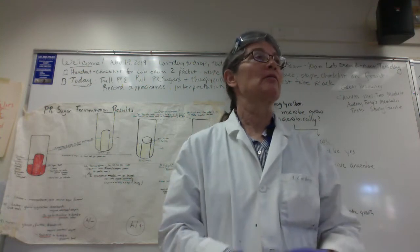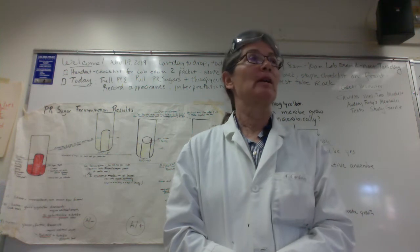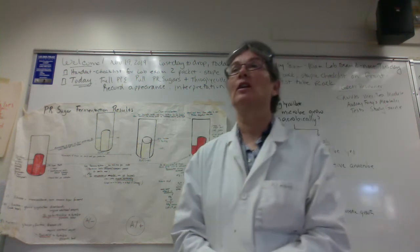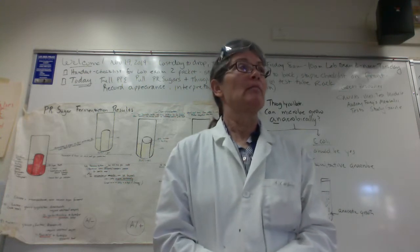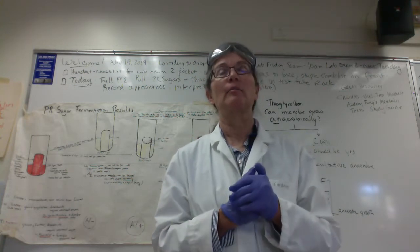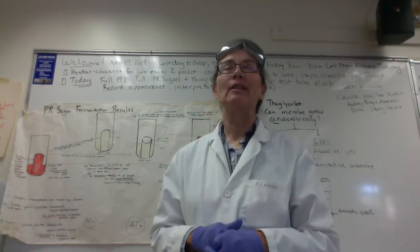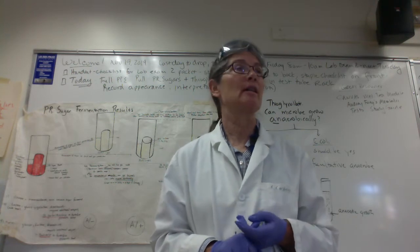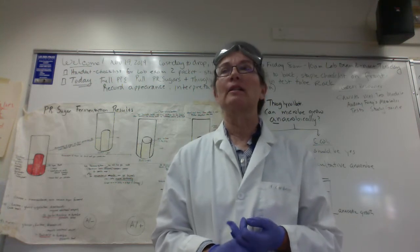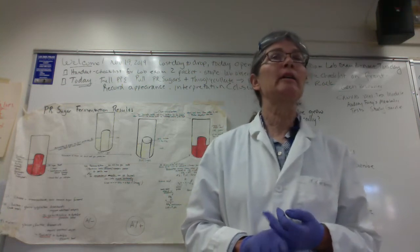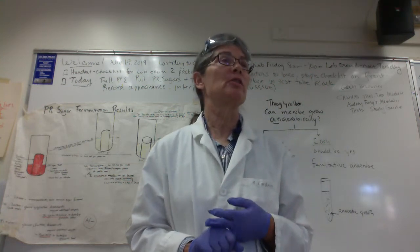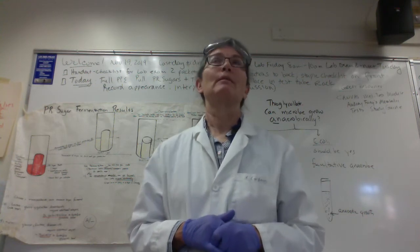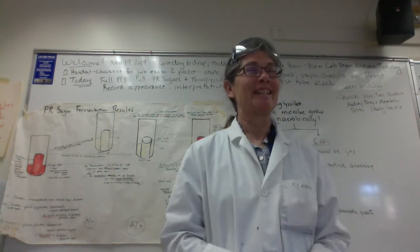What about lactose? Lactose is also a disaccharide. What are the two monosaccharides that make up lactose? Glucose and galactose. And what would we call the enzyme that hydrolyzes the glycosidic bond in lactose? Lactase. And what's the fancy name for the E. coli lactase? Beta-galactosidase. Good. So if your microbe is going to ferment lactose, which additional enzyme must it make? Beta-galactosidase.